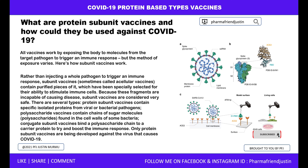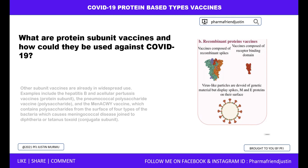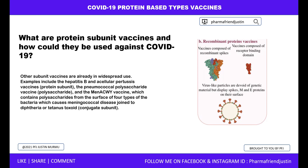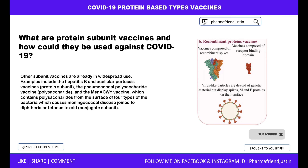Only protein subunit vaccines are being developed against the virus that causes COVID-19. Other subunit vaccines are already in widespread use. Examples include the hepatitis B vaccine, the pneumococcal polysaccharide vaccines, and the meningococcal vaccine, which contains polysaccharides from the surface of four types of bacteria that cause meningococcal disease, joined to diphtheria or tetanus toxoid — a conjugated subunit vaccine.